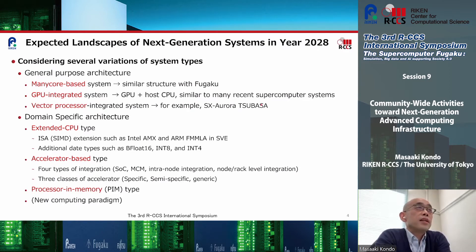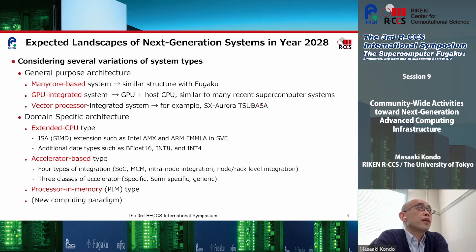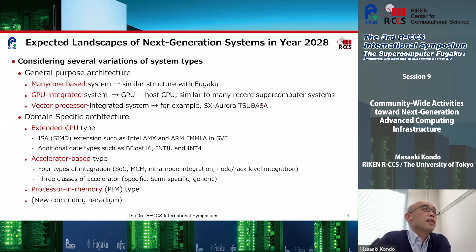Now let's move on to the contents of the white paper. I'd like to talk about the expected landscape of next generation systems around year 2028 or 2030. We considered several system types. For general purpose architecture, we assume three types: a many-core based system similar to Fugaku with the A64FX processor; a GPU-integrated system with GPUs and host CPUs, which is very common in recent supercomputers; and a vector processor, which is a projection of the SX-Aurora Tsubasa system developed by NEC.